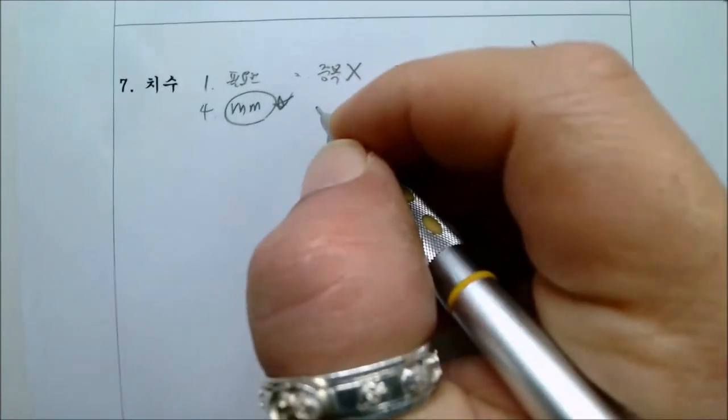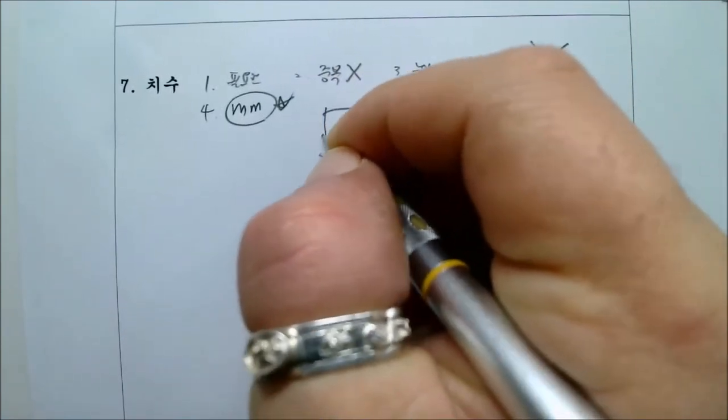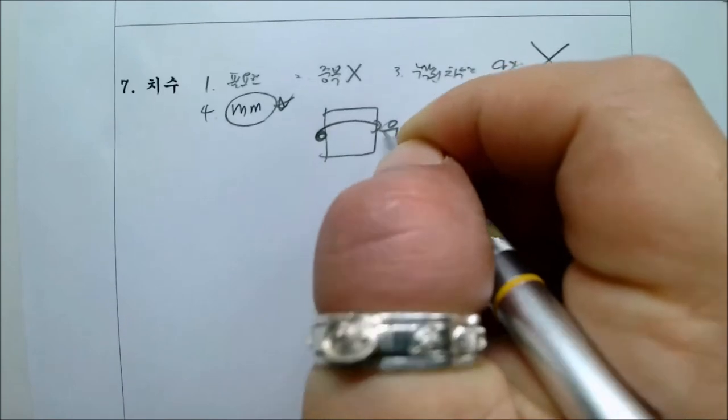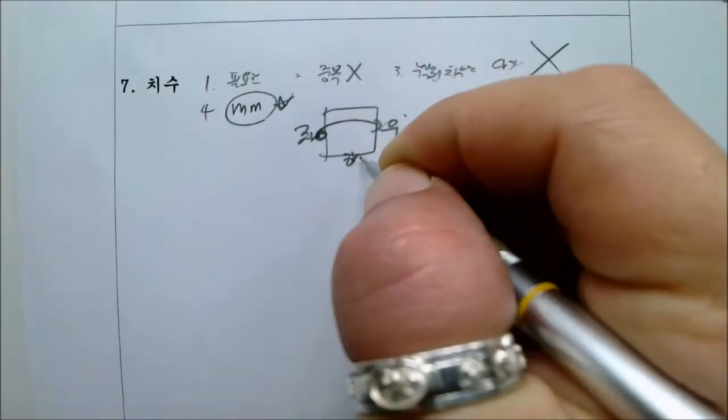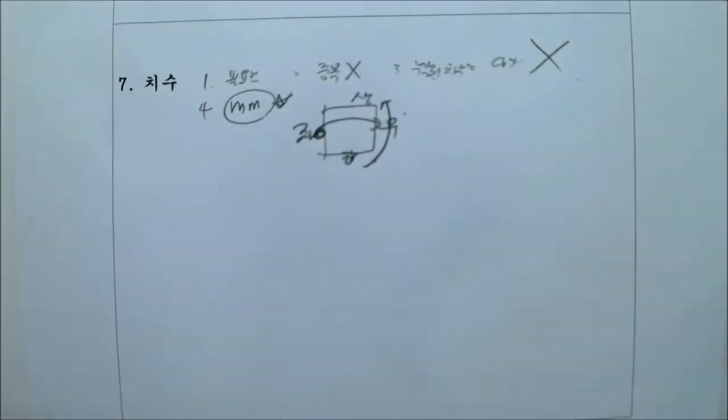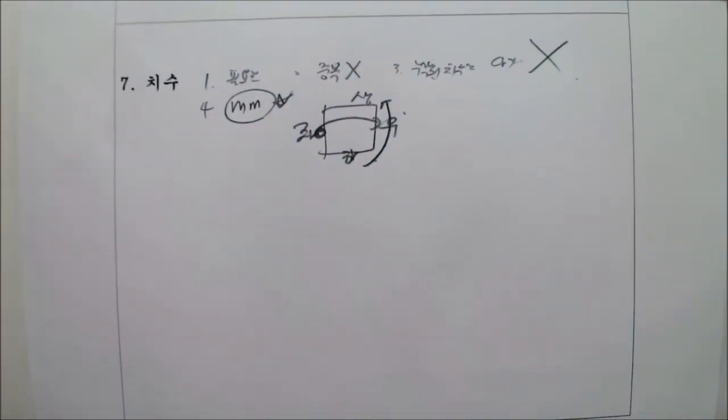치수는 도면에, 도면에 좌에서 우로, 그 다음에 하에서 상으로. 이것도 선생님이 다시 설명해 드릴게요. 아시겠죠?